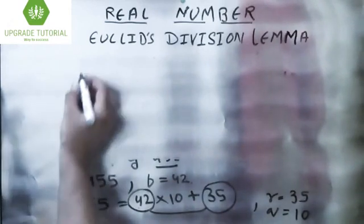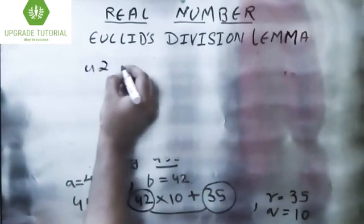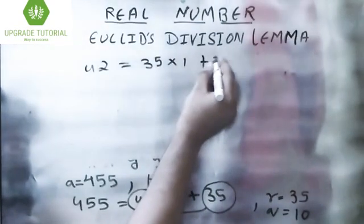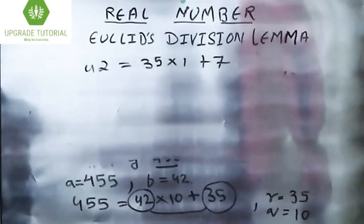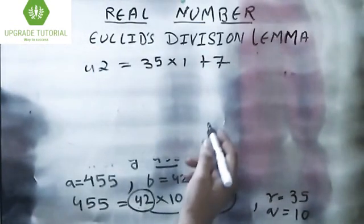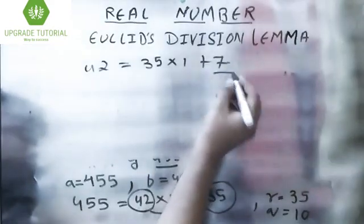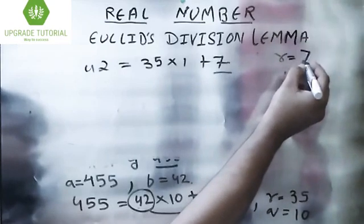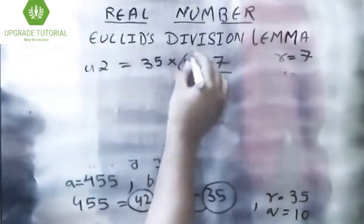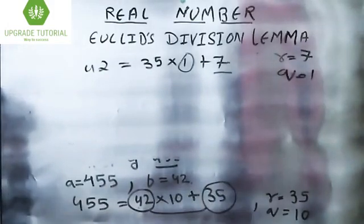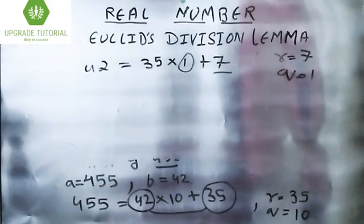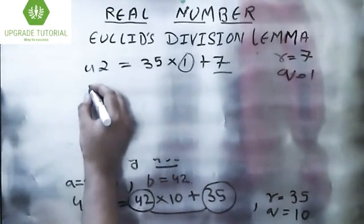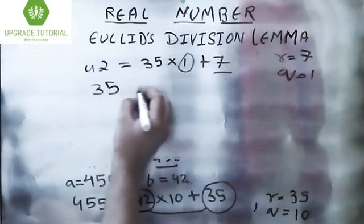Now 42 = 35 × 1 + 7. When we compare this with our Euclid's Division Lemma equation, r = 7 and q = 1.